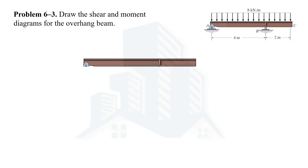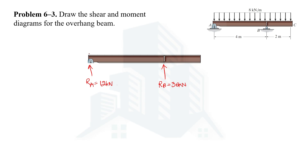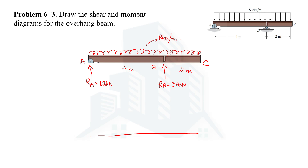Now let's draw the shear force diagram. We have RA = 12 kN and RB = 36 kN, and a UDL of 8 kN/m over the beam. The shear force diagram will be divided into two portions — from A to B and from B to C — because the presence of the reaction force RB at B changes the shear force equation.